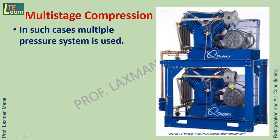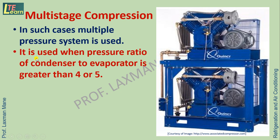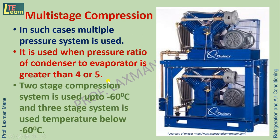In such cases, a multi-stage compressor — a multiple pressure system — is used. It is used when the pressure ratio of condenser to evaporator is greater than 4 or 5. A two-stage compression system is used up to minus 60 degrees Celsius evaporator temperature, and a three-stage system is used for temperatures below minus 60 degrees Celsius.